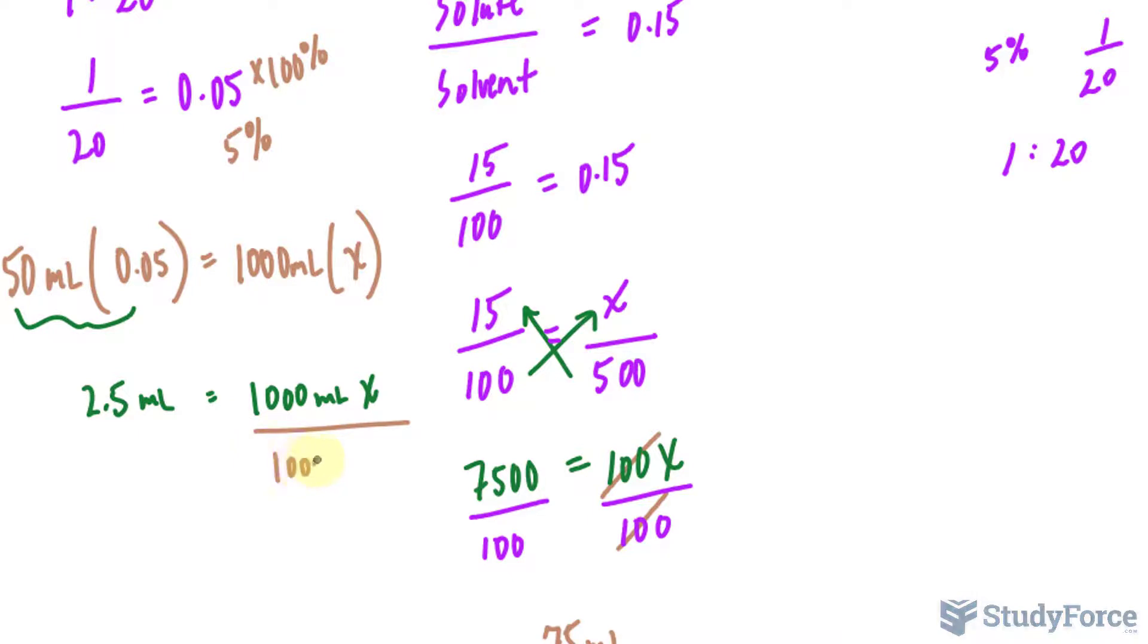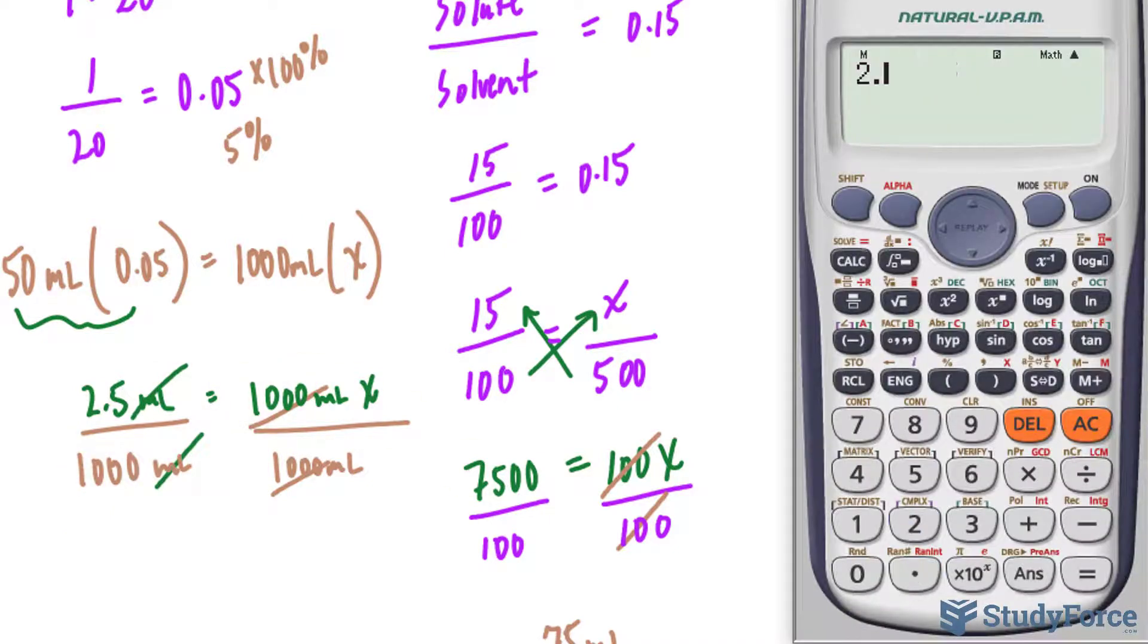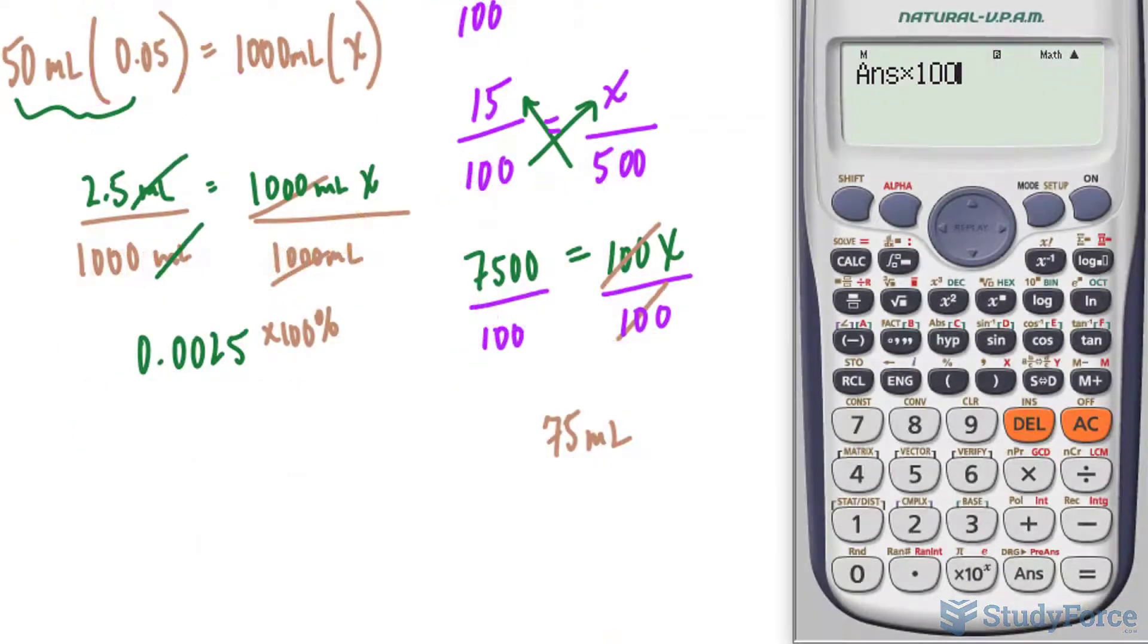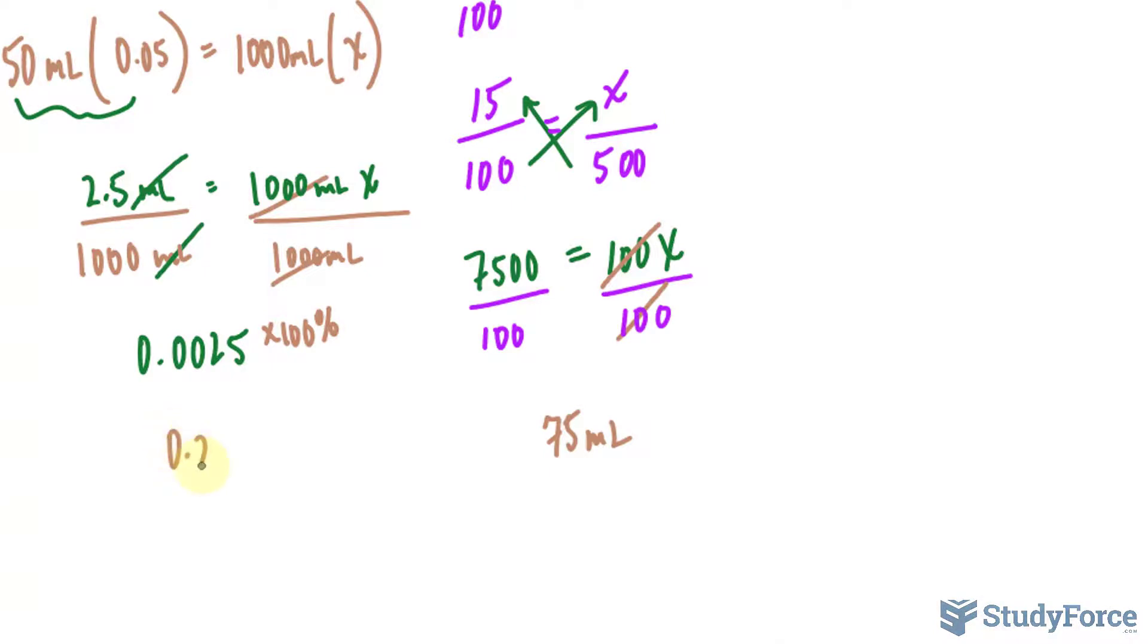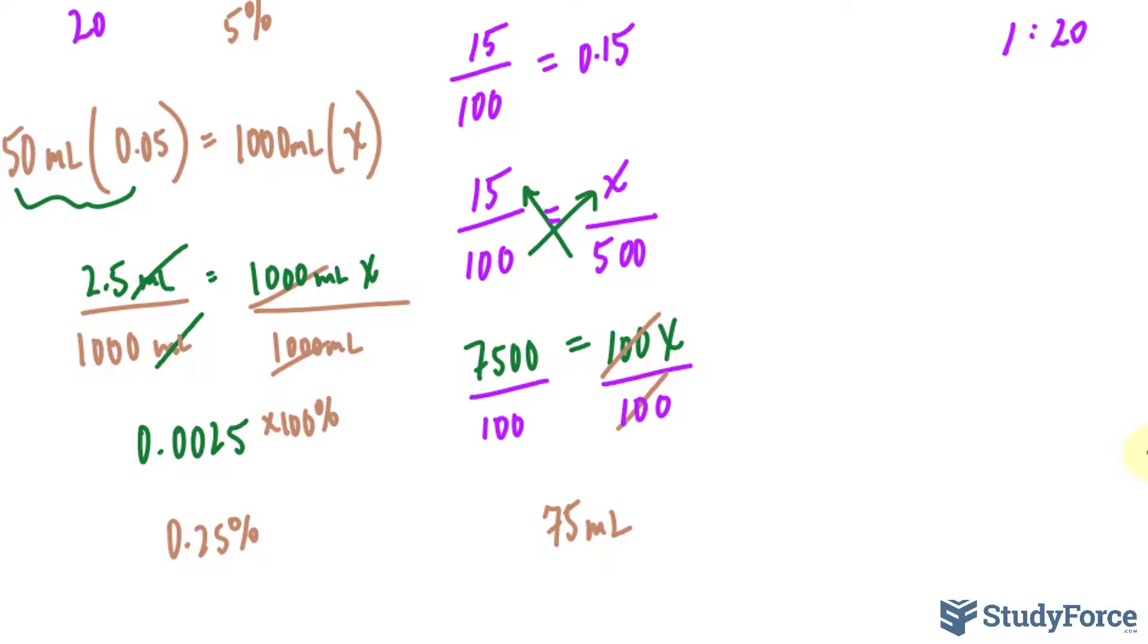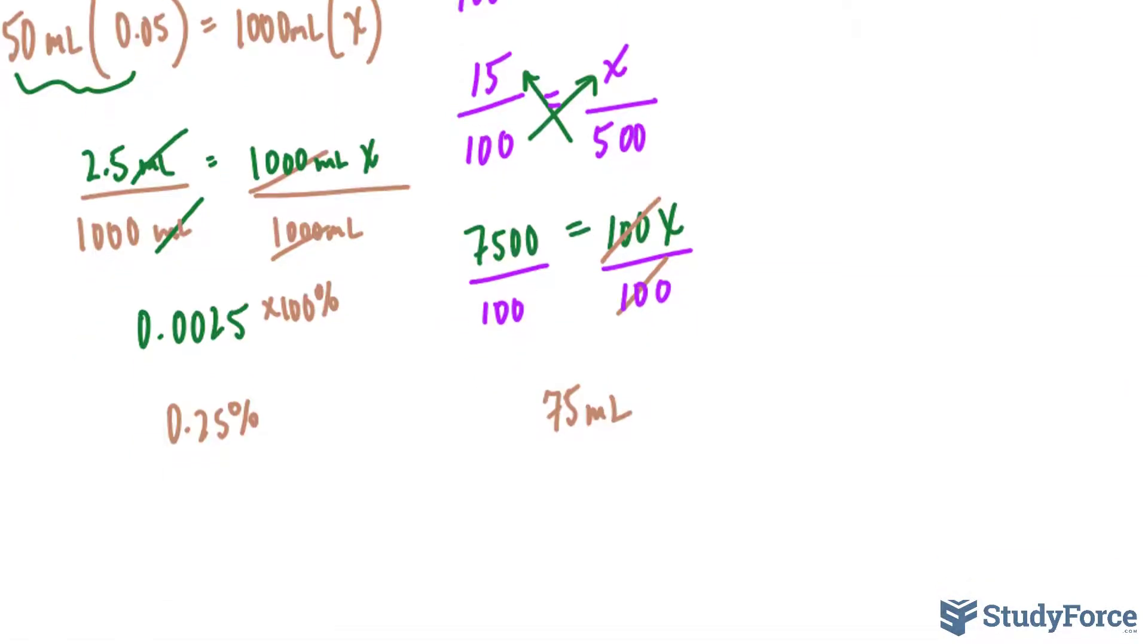Then divide both sides by 1000 milliliters. And you should end up with your C2 value. And we get 2.5 divided by 1000. Your calculator should give you a value of 0.0025. But when multiplied by 100 percent, you end up with 0.25 percent. So the concentration went from 5 percent down to less than 1 percent at 0.25 percent.